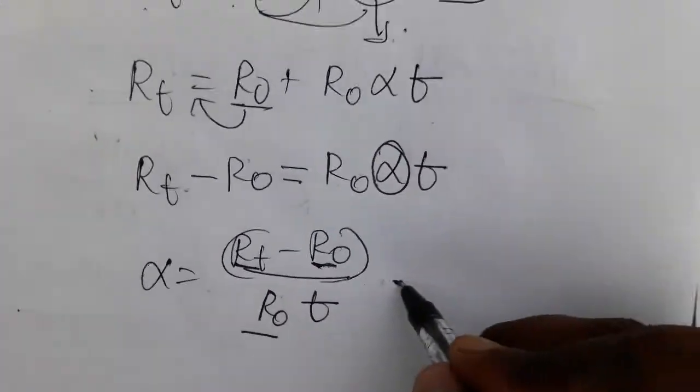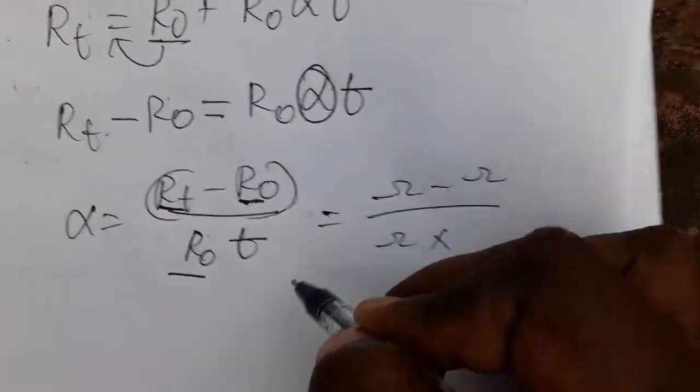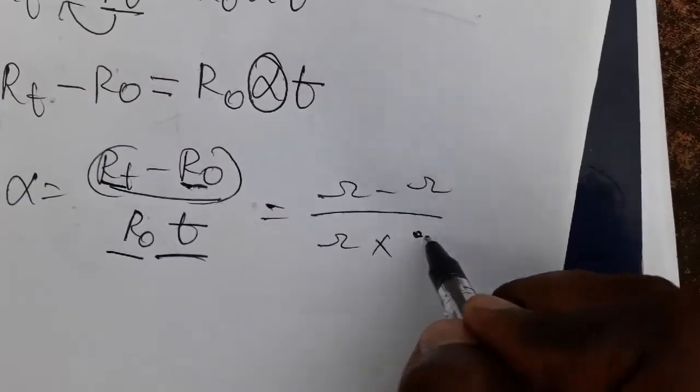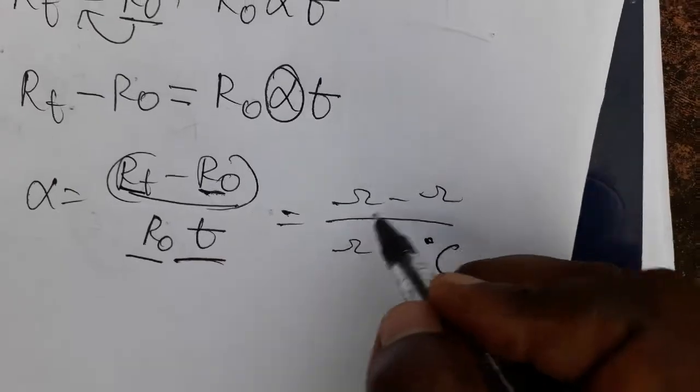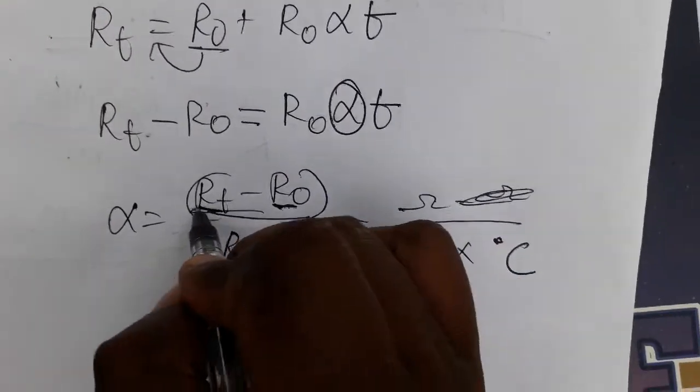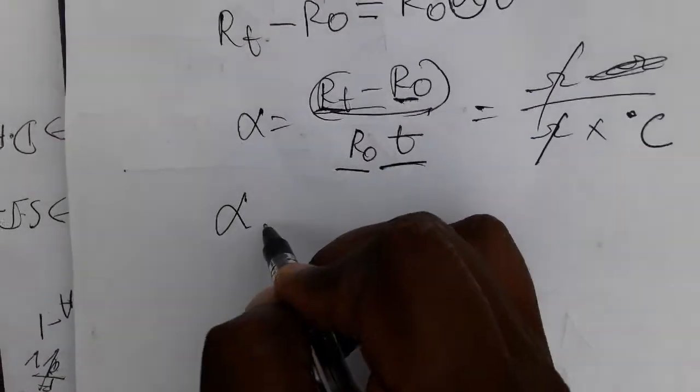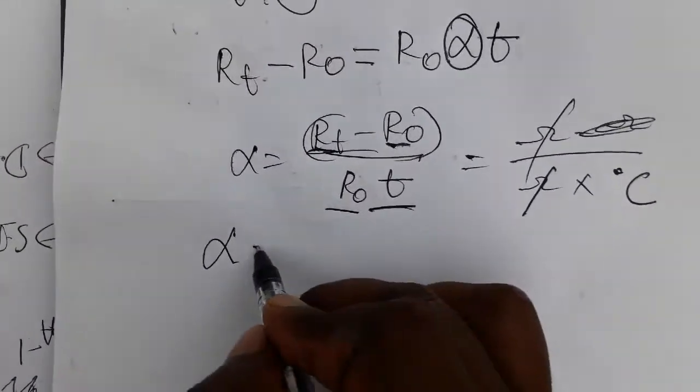The units are: resistance is in ohms. Ohms minus ohms divided by ohms into T. T is temperature in degree Celsius. We can take ohms as common, so numerator will get only one ohm. Ohms cancel out.